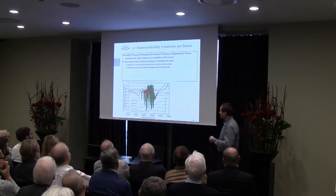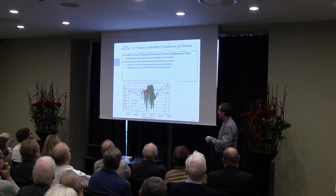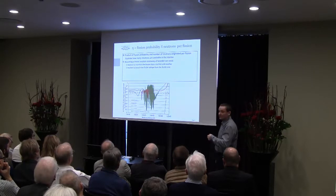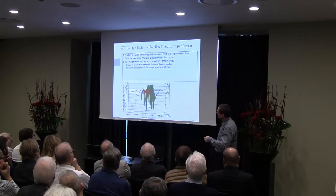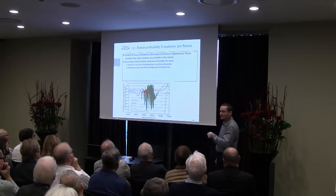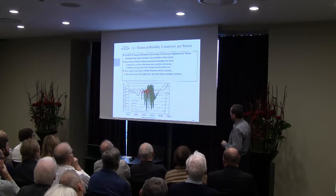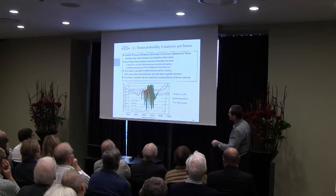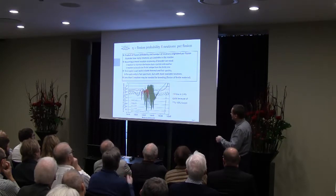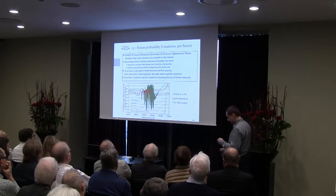The curves of fission probability multiplied by the number of neutrons show that uranium-233 is above the required two-neutron line in both thermal and fast spectra, and is more or less equal in both. Plutonium is around it, so probably you cannot operate it as a breeder in thermal spectra, but in the fast spectra it performs better than thorium. Also, because you can fission uranium-238, you should add an additional line — not two neutrons but 1.9 neutrons, because there can be up to 10% fissioning happening on uranium-238.